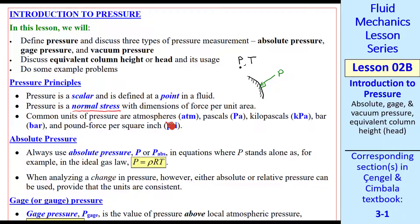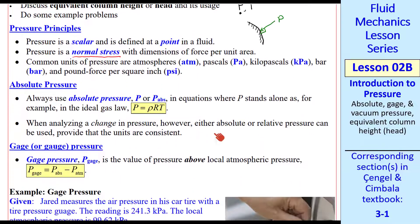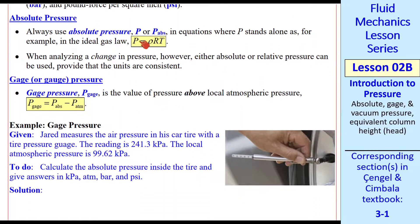Here are some common units of pressure: atmosphere, pascals, kPa, kilopascals, bar, and psi. First, let's talk about absolute pressure. You always have to use absolute pressure, which we denote by P or P abs, in any equation where P stands alone. In other words, it's not a difference in pressure. For example, the ideal gas law. We must use absolute pressure here, just like we use absolute temperature. Our notation is P by itself, without any subscript, is the same as P absolute.